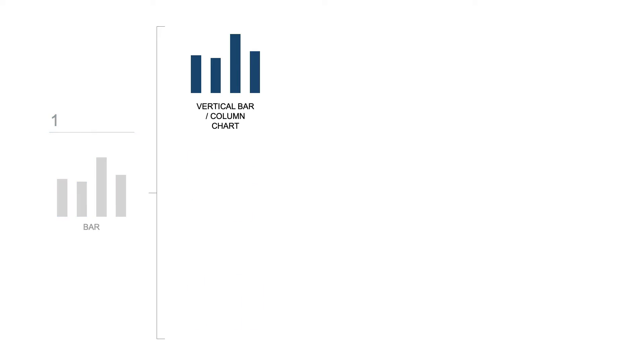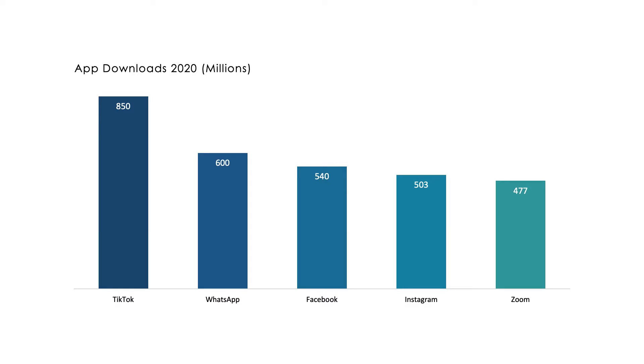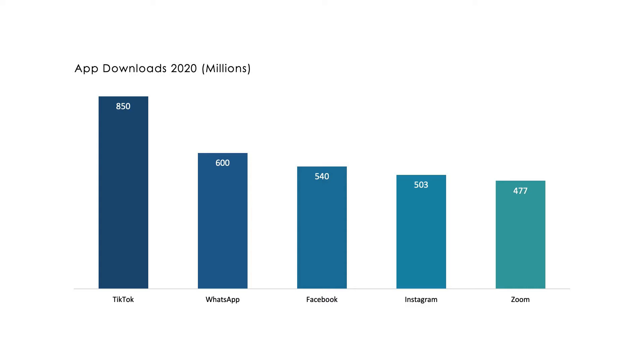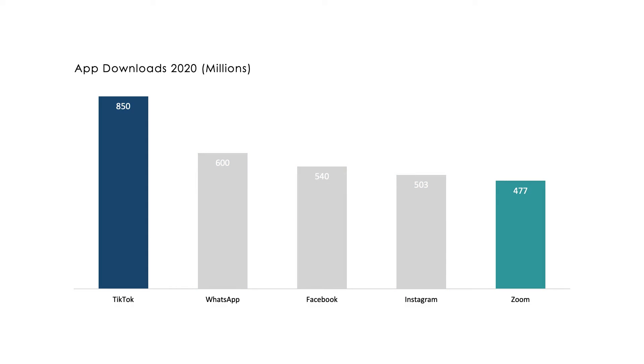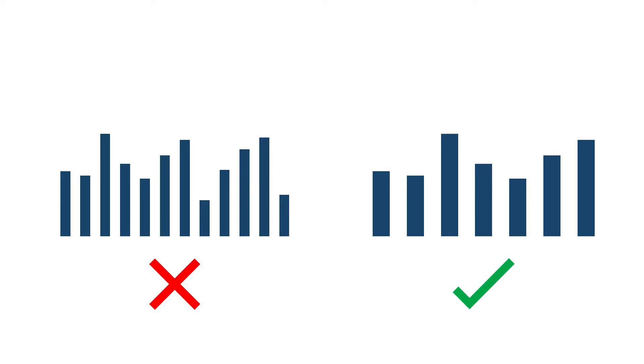Vertical bar charts are the best for category comparison — comparing countries, teams, or in this example, different apps and how many downloads there were in 2020. With bar charts we can quickly and easily compare differences in data, with the story here being that despite what most people think, TikTok — not Zoom — was the most downloaded app of 2020. However, vertical bar charts lose that quick comparability when there are lots of categories, so try to only use them if there are fewer than seven categories.